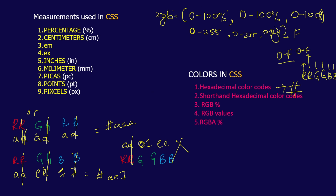Next you have RGBA. Adding the letter 'A' (alpha) allows you to control the intensity or transparency of the color. For example, if you have pink and want a lighter shade, you vary the alpha value. Alpha ranges from 0 to 1 — you can use 0.1, 0.2, 0.3, etc. — and this changes the intensity. You can use RGBA with both percentage and value formats. Finally, you have color keywords: normal words like red, green, blue, yellow, orange, and brown that you can directly use in your formatting.